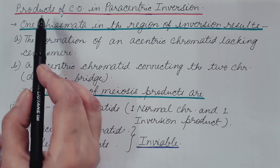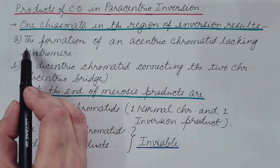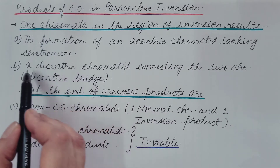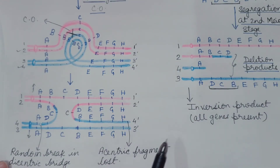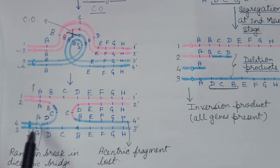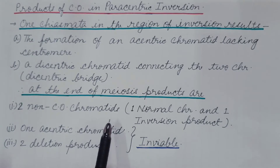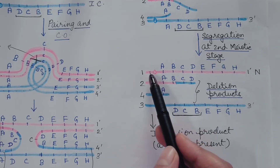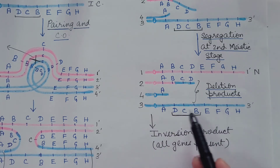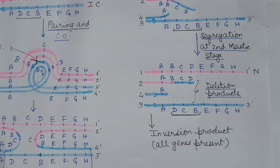In summary, one chiasmata in the region of inversion results in the formation of an acentric chromatid lacking a centromere and a dicentric chromatid connecting the two chromosomes, known as the dicentric bridge. As a result, we get an acentric fragment (not viable) and a dicentric bridge with two non-crossover chromatids attached. At the end of meiosis, products are one normal chromosome, one inversion product (both viable), two deletion products, and one acentric chromatid (both non-viable).